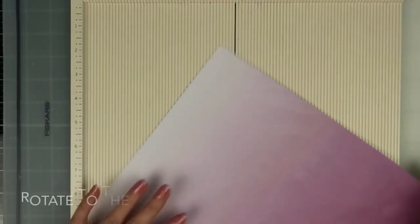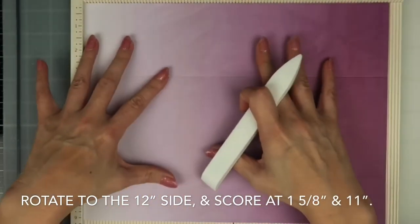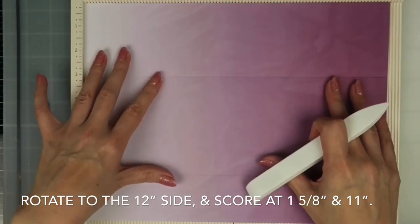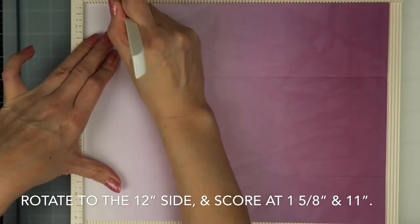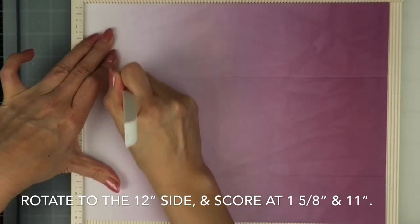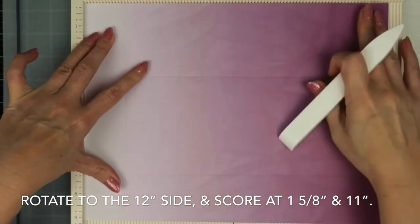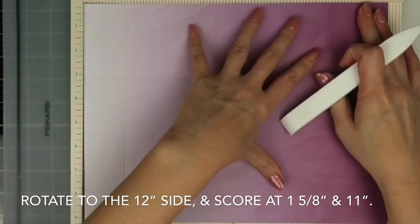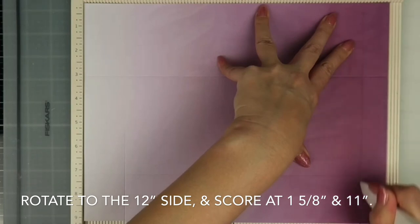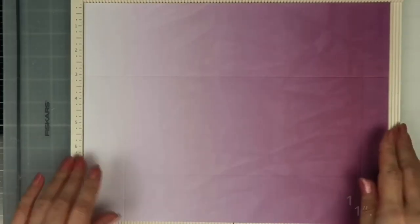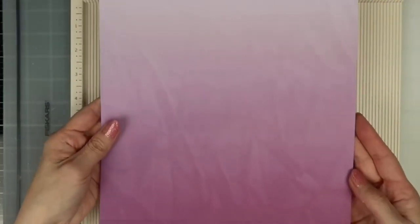Now go ahead and rotate your cardstock with the 12 inches across the top and we'll score this at one and five eighths inches and at 11. And that's all the scoring we'll need to do.